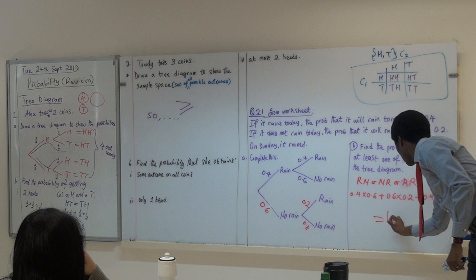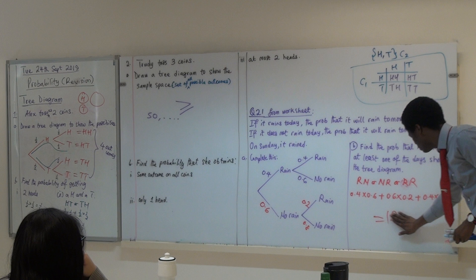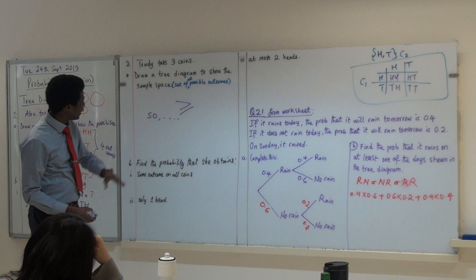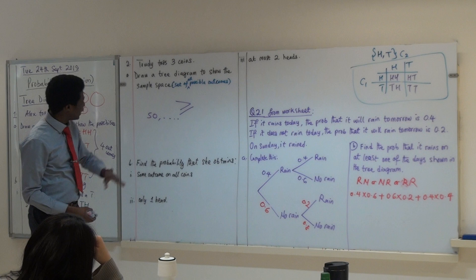What happens if I get my result to be 1.2? It's wrong. Why? Can't be more than one. Can't be more than one. Okay? So, with this, can I ask you to please complete the 2D question, and let's share whatever we get, then we proceed with the next set of questions in the worksheet.